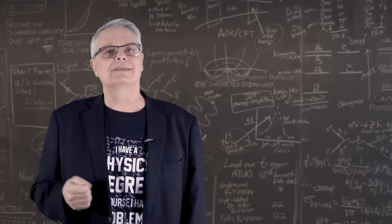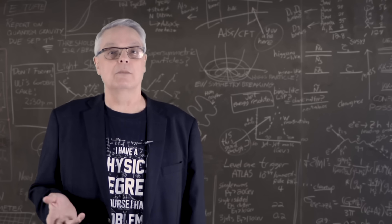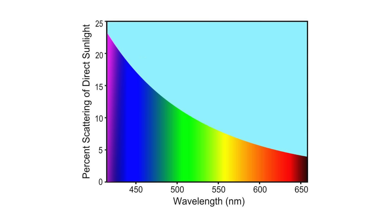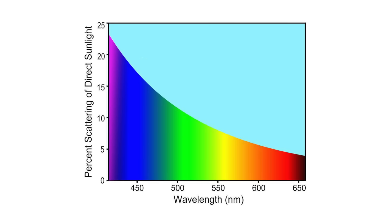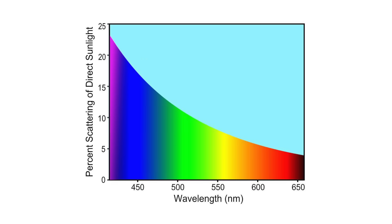So why does the sky appear blue? It's because of how air molecules interact with light. You see that air molecules scatter light, all colors of light, but they scatter short wavelength light more.